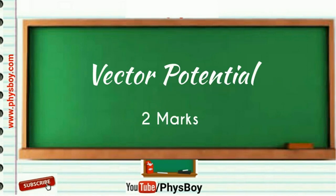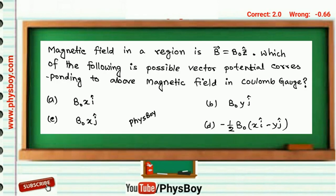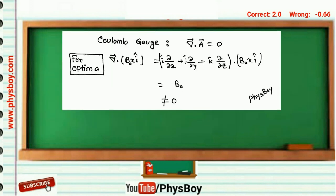The problem was: magnetic field in a region is B_zero k cap. Which of the following is a possible vector potential corresponding to the above magnetic field in the Coulomb gauge? The mathematical form of Coulomb gauge is divergence of A equals zero, where A is the vector potential.